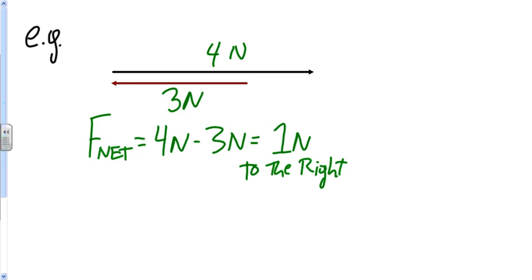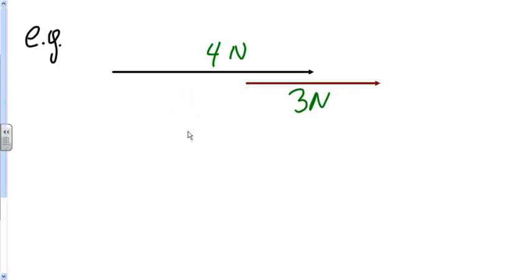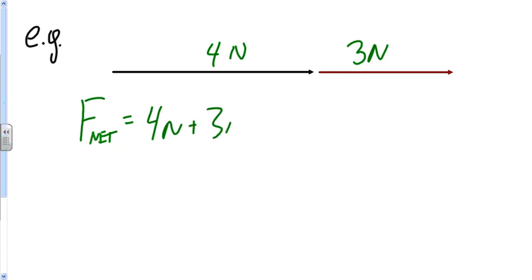The question would be, what would happen if I had my vectors going in the opposite direction? What if I had my 3 newtons now also going to the right? I would do my linear resolution again, put them side by side, and realize that since they're going in the same direction, we would add them together. Therefore, my net force for this one would be 4 newtons plus 3 newtons, which is 7 newtons to the right.